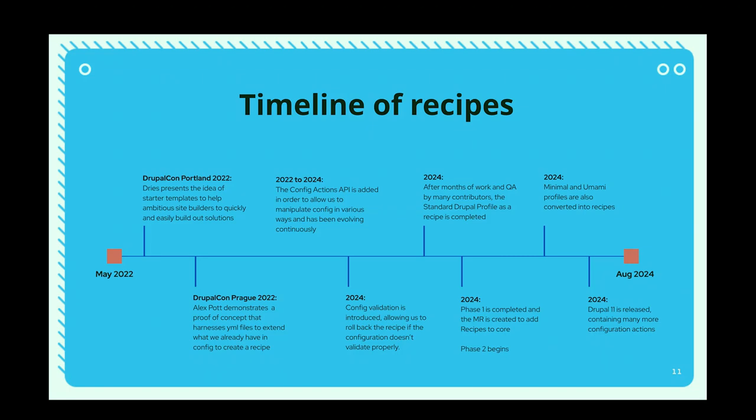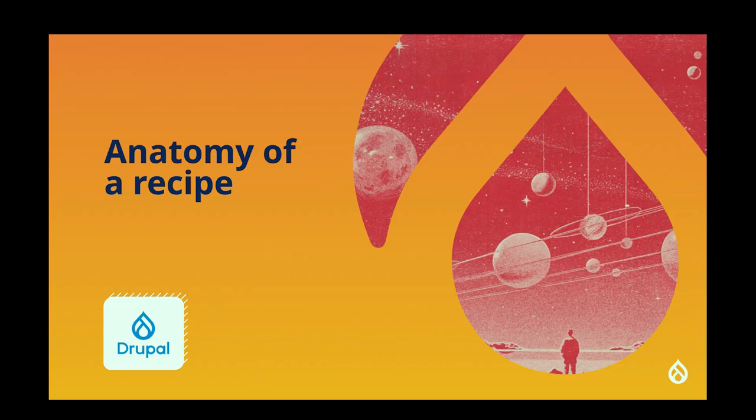There's been lots of progress around config validation. There's been a lot of work within the community around getting Drupal's install profiles converted over to recipes — the first one was the standard profile, and then more recently the minimal and umami profiles. There's also phase two beginning, and now with Drupal 11's release, a variety of improvements and lots of traction in the issue queue.